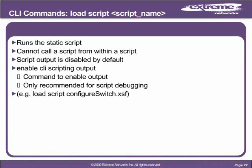Load script scriptname is a pretty important command — it's what enables you to run CLI scripts. Scripting output is disabled by default. You can enable it with the command 'enable CLI scripting output'. It's disabled by default to silence script output to the CLI, though there are cases when you might want to see it. An example is: load script configure_switch.xsf. Currently, you cannot call a script from within a script, however in the future this may be possible.